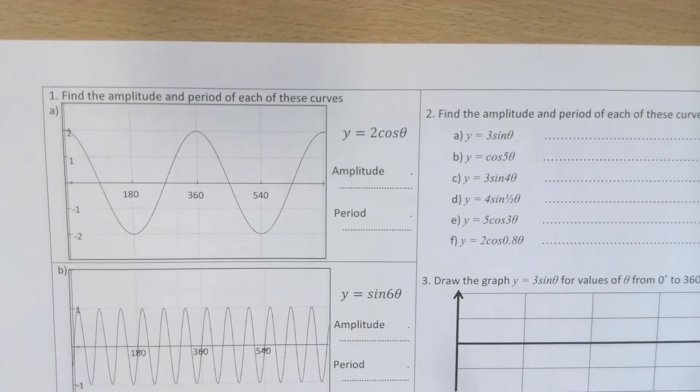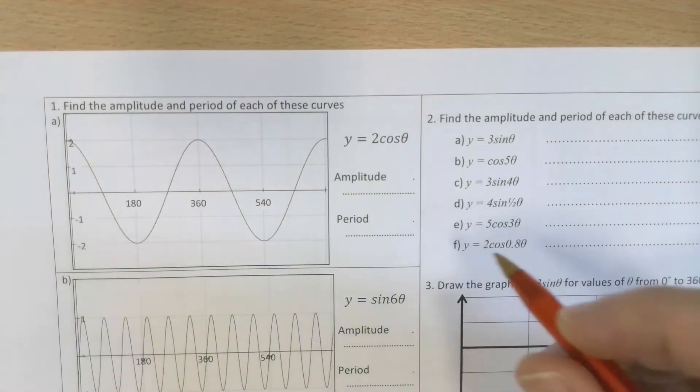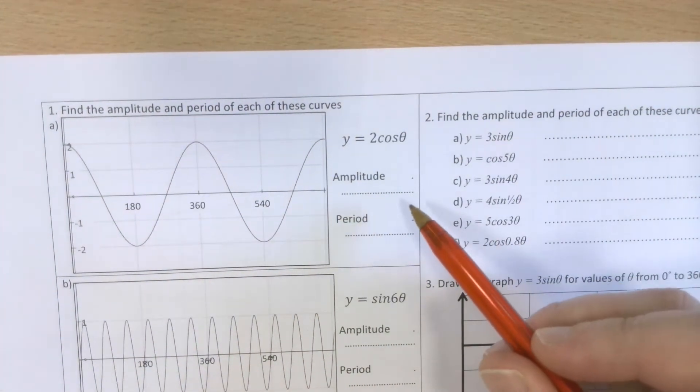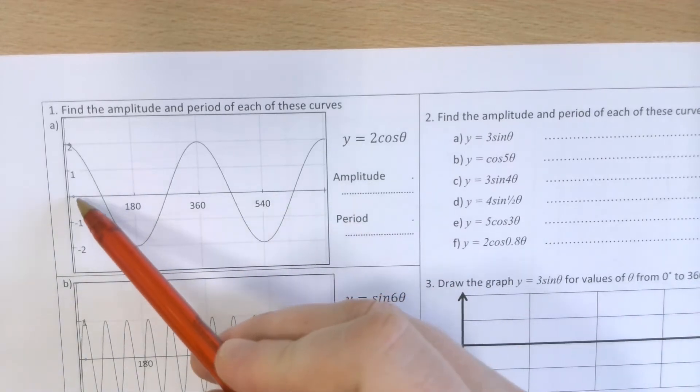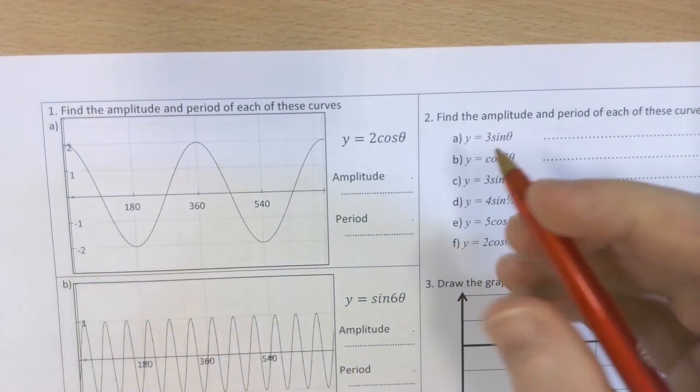As you guys have already read up, amplitude is the height between the x-axis and the maximum height of the graph. So in this case, it's 2.